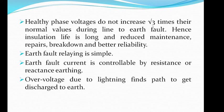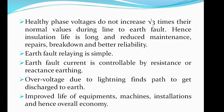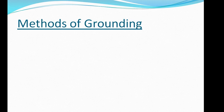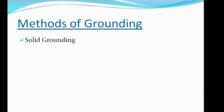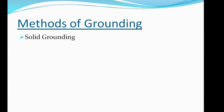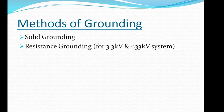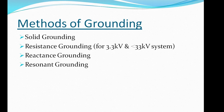Overvoltage due to lightning finds a path to discharge to earth, and finally there is improved life of equipment, machines, and installations, leading to overall economy. Coming to the methods of grounding, there are several practices based on different voltage levels — medium voltage, high voltage, low voltage, or extra high voltage — and the fault current profile. There are four types of grounding methods. Number one is solidly grounded: this is used for low voltage and extra high voltage systems, up to 3.3 kV and above 33 kV, for example 400 kV systems.